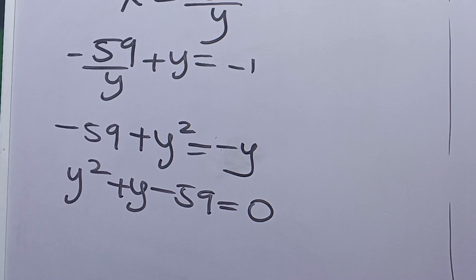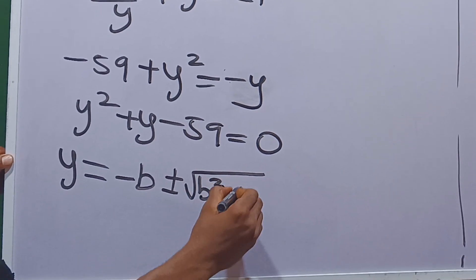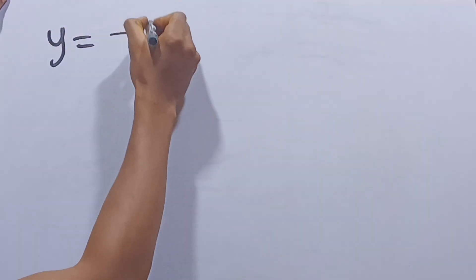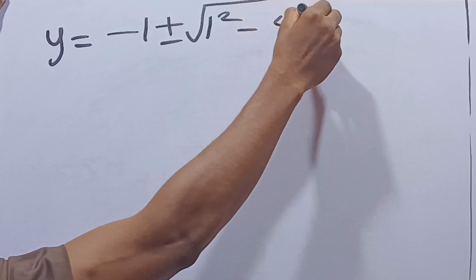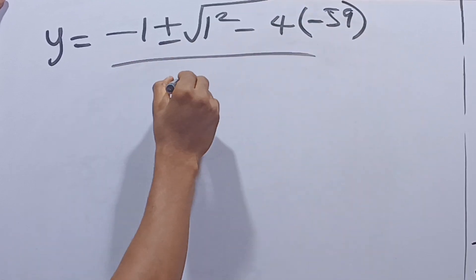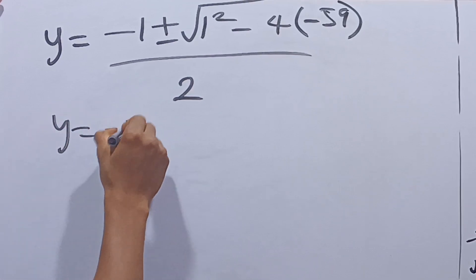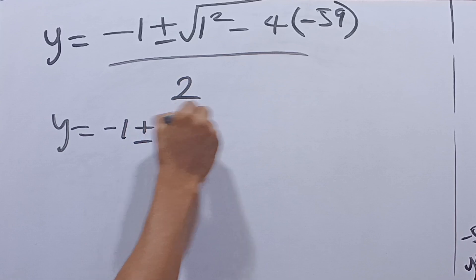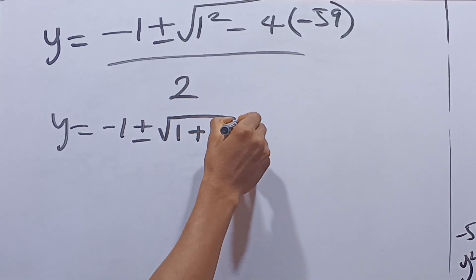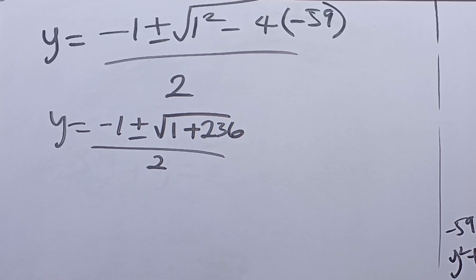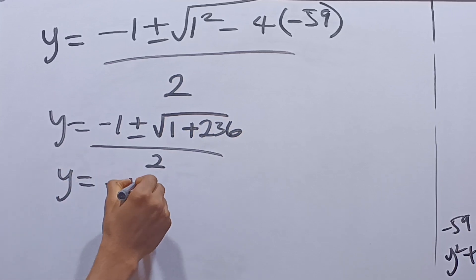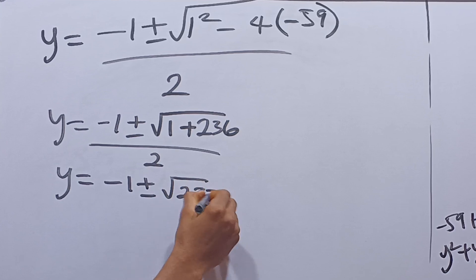Let's use the quadratic formula to solve this. We have y equals minus b plus or minus square root of b squared minus 4ac, all over 2a. So y equals minus 1 plus or minus square root of 1 plus 4 times 59, which is 237, all over 2. Therefore y equals negative 1 plus or minus square root of 237, all over 2.